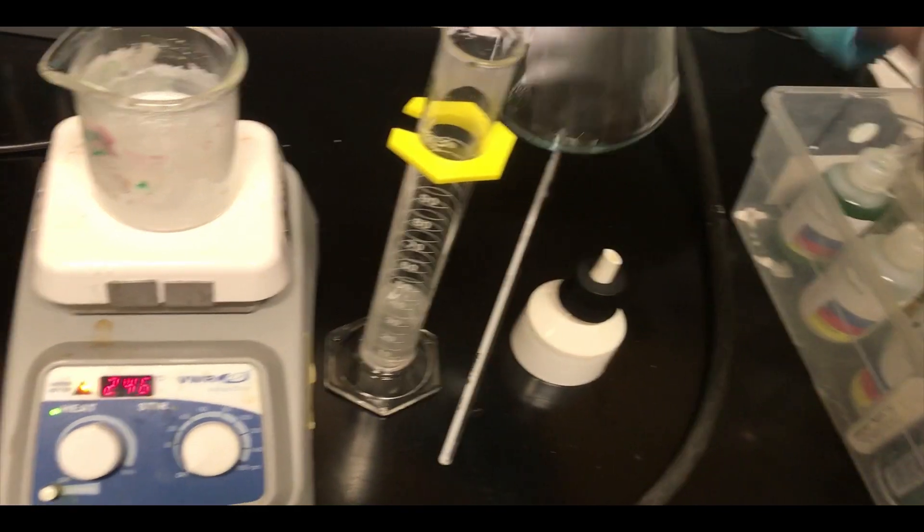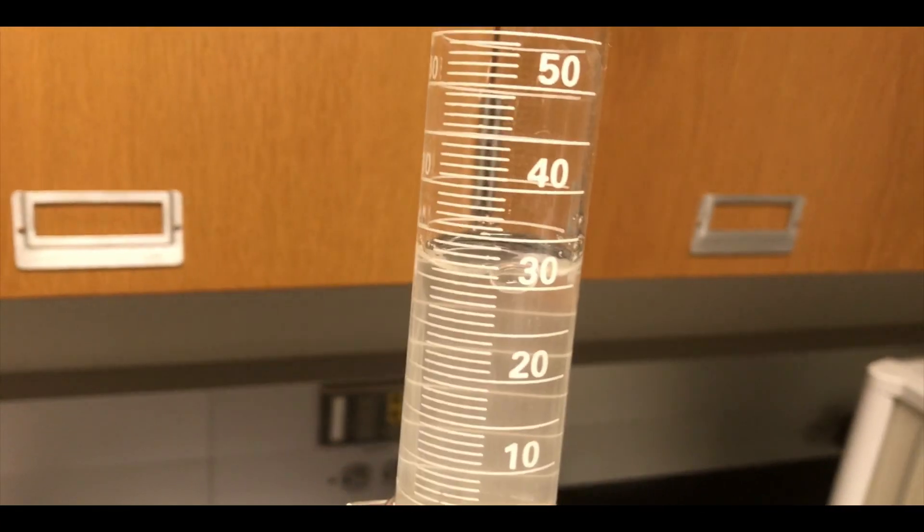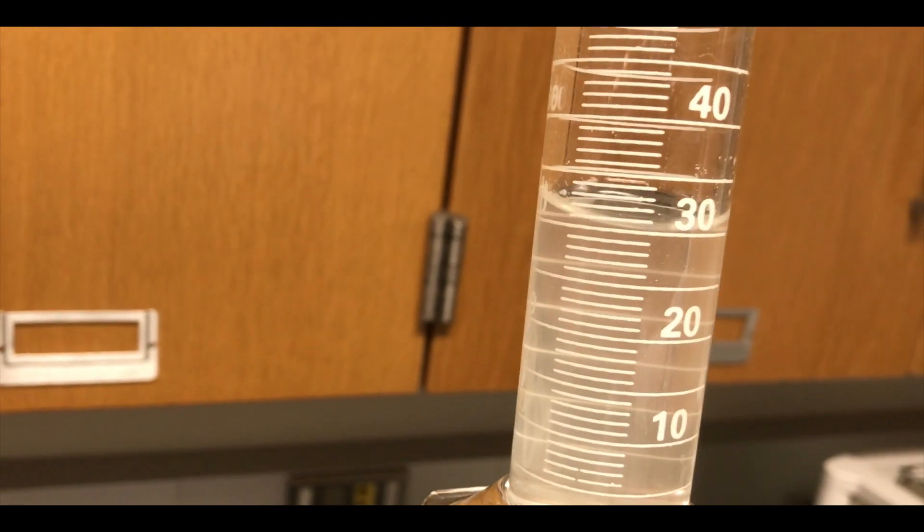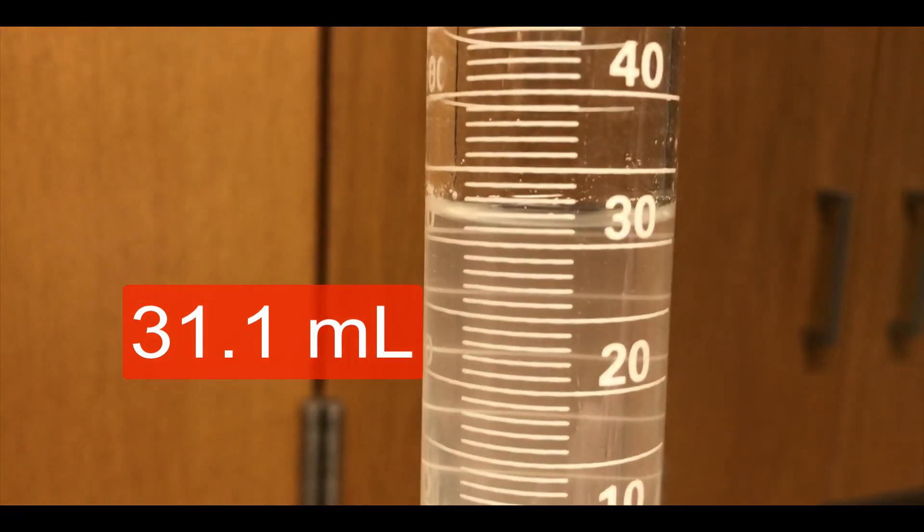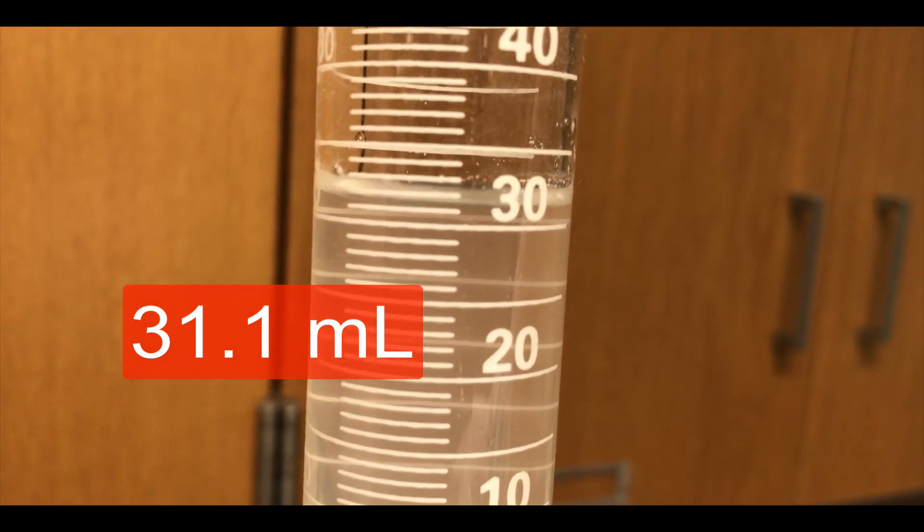The key thing is measuring, is reading how much volume is in there before we transfer into the Erlenmeyer flask and actually pursue the titration. So we'll look at the meniscus here to get a feel for exactly how much volume of magnesium hydroxide solution is in there.